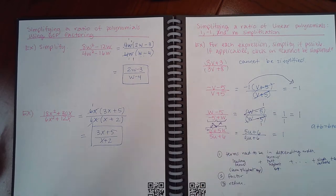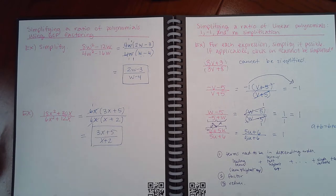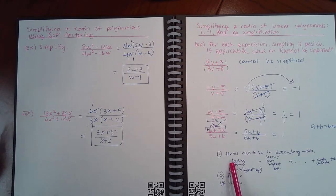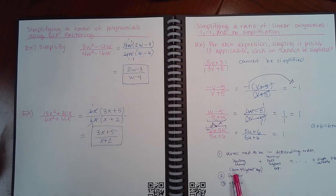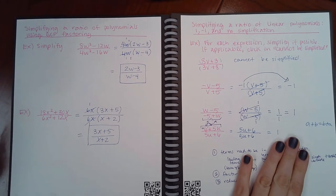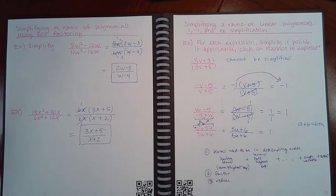The next page is simplifying your ratio with linear polynomials — cases that give 1, negative 1, or no simplification. Make sure terms are in descending order: the leading term with the highest exponent first, then down to the constant. You also need to factor if possible, and then reduce. If it cannot be simplified, select 'cannot be simplified.' For (8v + 3) over (3v + 8), you cannot factor either expression, and the factors don't match — so this cannot be simplified.